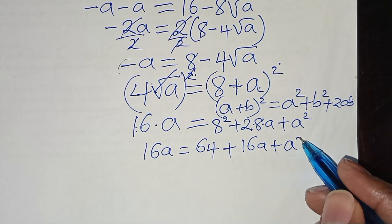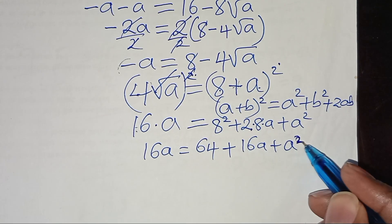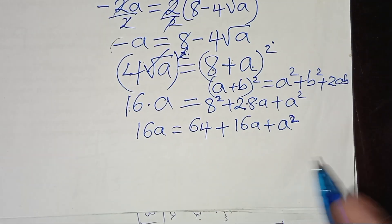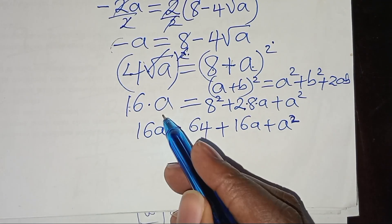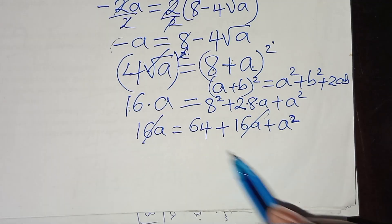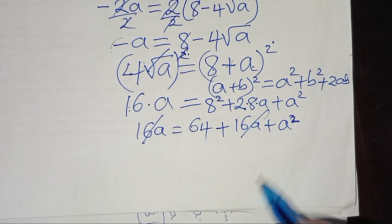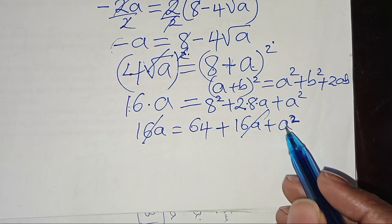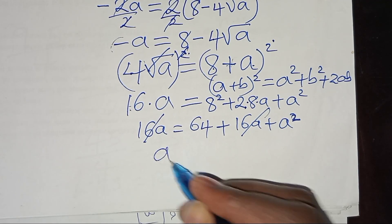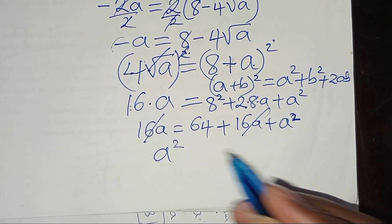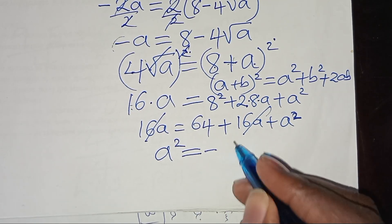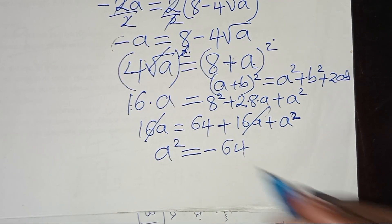The 16a terms on both sides cancel, leaving: 0 = 64 + a², which means a² = −64.